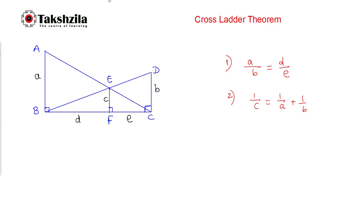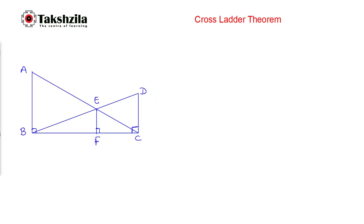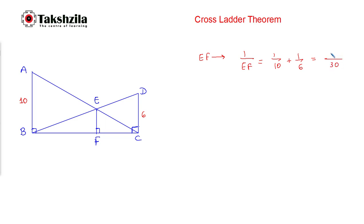Now let's see how to use these concepts. In this diagram, let's say the length of AB is 10 and the length of DC is 6. To find the length of EF, we apply the formula: 1 upon EF equals 1 upon 10 plus 1 upon 6. The LCM is 30, giving us 3 plus 5 equals 8 over 30. So the length of EF is 30 divided by 8, which equals 15 divided by 4, or 3.75.